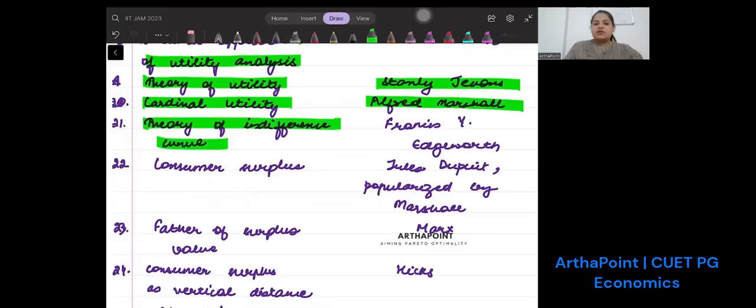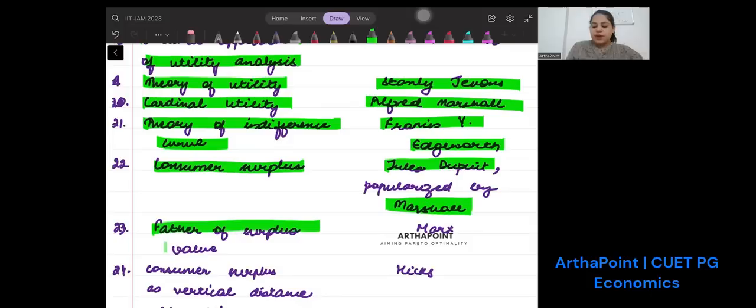Theory of utility was given by Stanley Jevons. Cardinal utility was given by Alfred Marshall. Theory of indifference curve was initially propounded by Francis Y. Edgeworth, but in many MCQs you may not find Edgeworth, so you may have to mark Hicks.